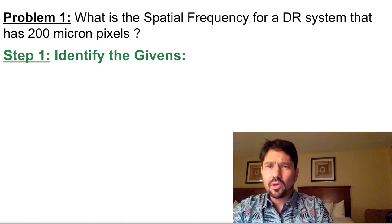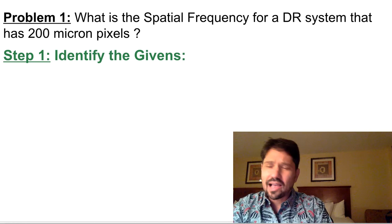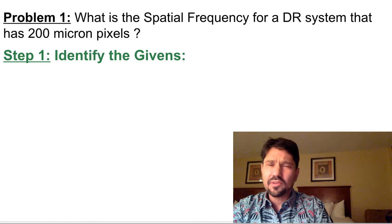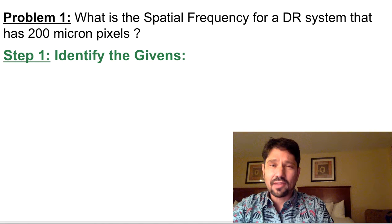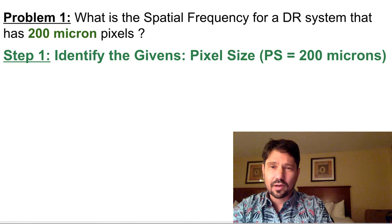Okay, so here's the first problem. What is the spatial frequency for a DR system that has 200 micron pixels? This is actually kind of saying what's the best spatial frequency that it can achieve with almost no magnification. So first, we'll identify the givens, and this time, this problem is pixel size, which equals 200 microns.